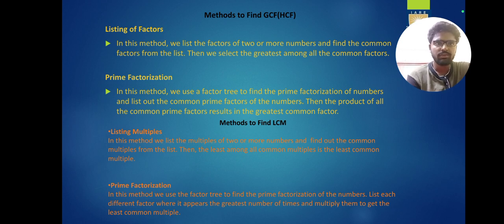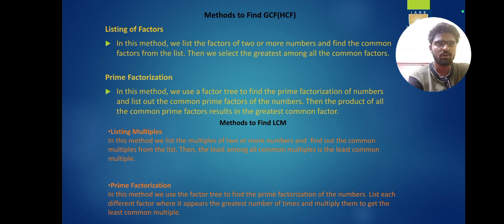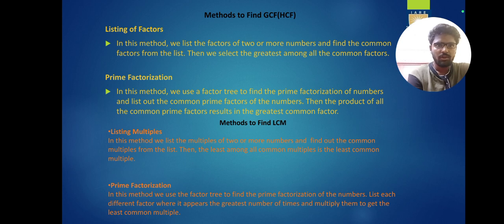Methods of finding the greatest common factor: first is listing of factors. In this method we list the factors of two or more numbers to find the common factor from the list, then select the greatest among all the common factors. Second is prime factorization — we use a factor tree to find the prime factorization of numbers, list out the common prime factors, and then the product of all common prime factors is the greatest common factor.